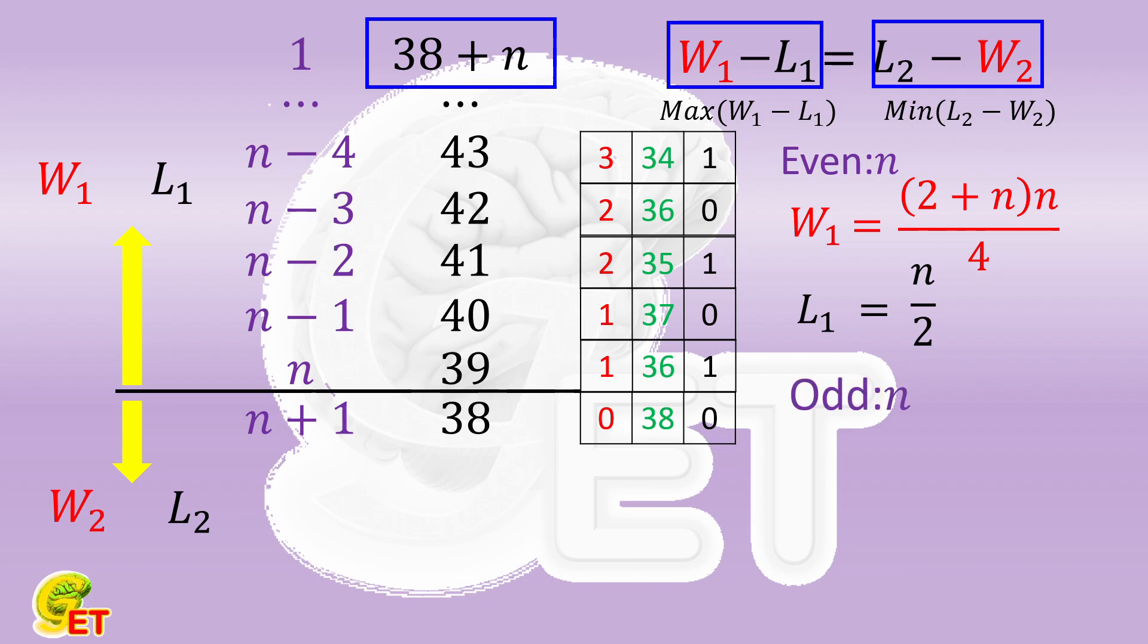In the same way, if n is odd, W1 is equal to the square of n plus 1 over 4. L1 is equal to half n plus 1.